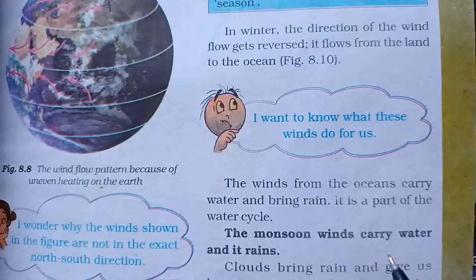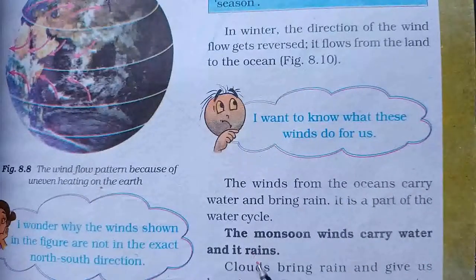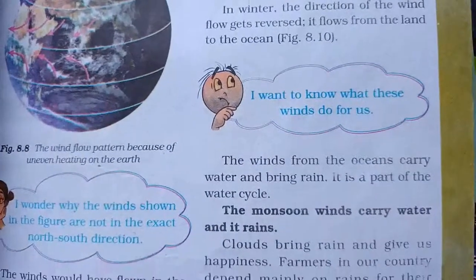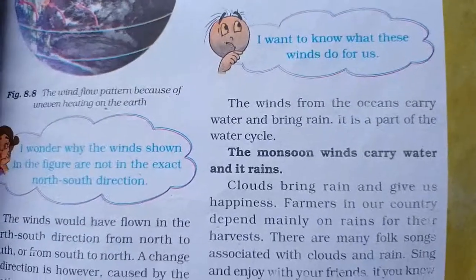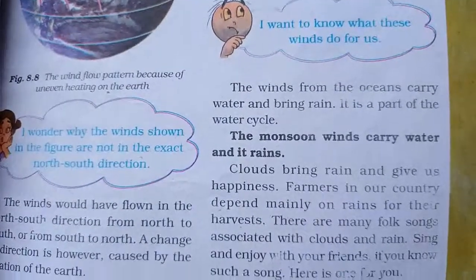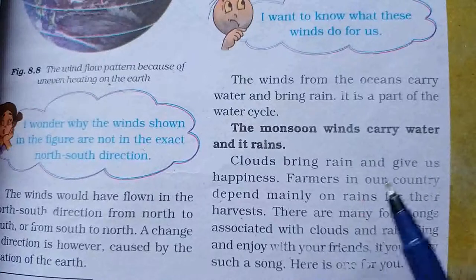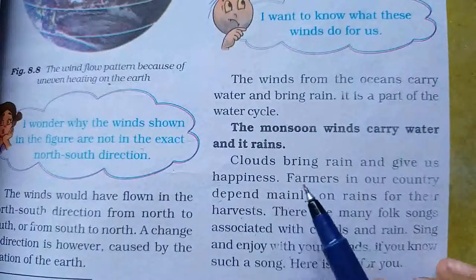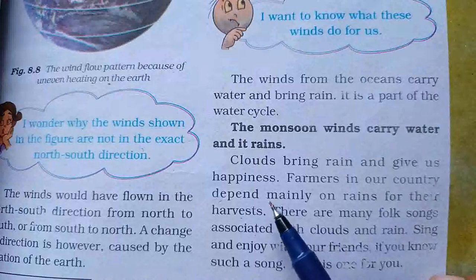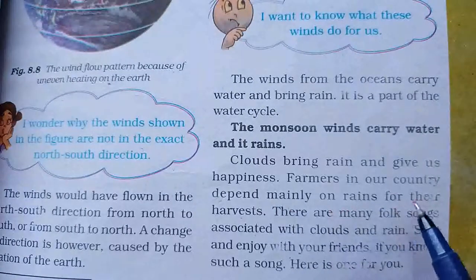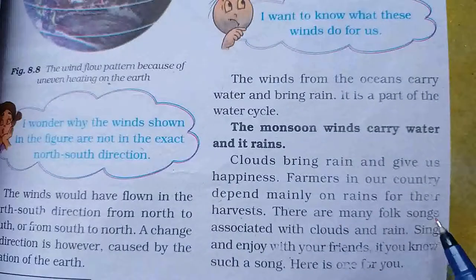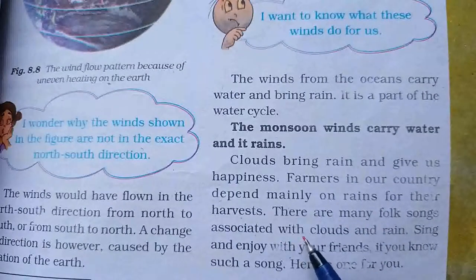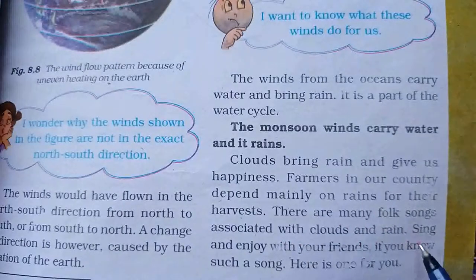The monsoon winds carry water and it rains. The monsoon winds contain water, and from that comes rain. Clouds bring rain and give us happiness. Farmers in our country depend mainly on rains for their harvest. There are many folk songs associated with clouds and rain.